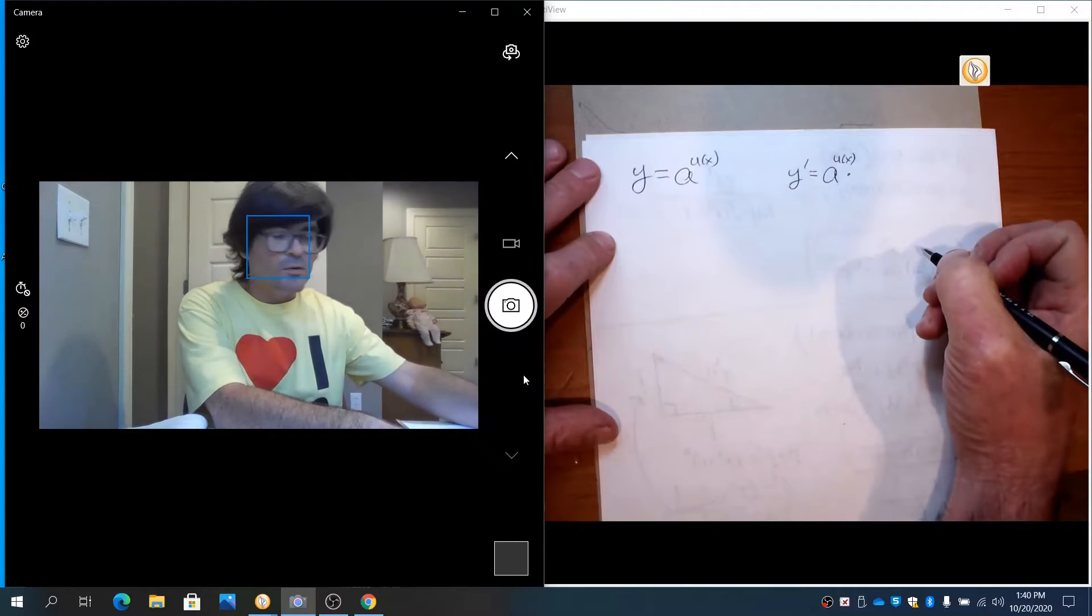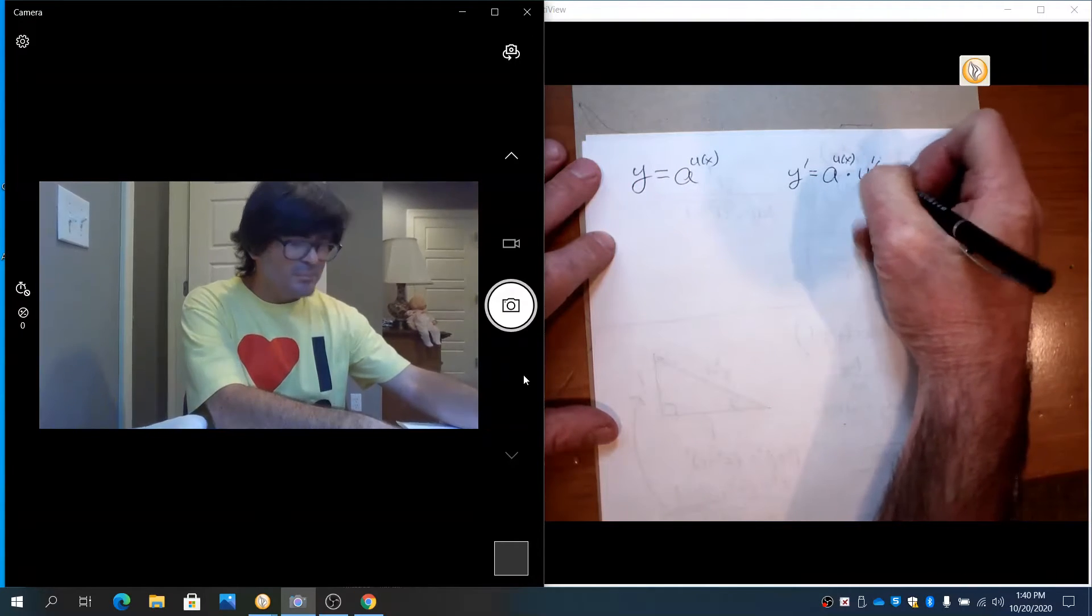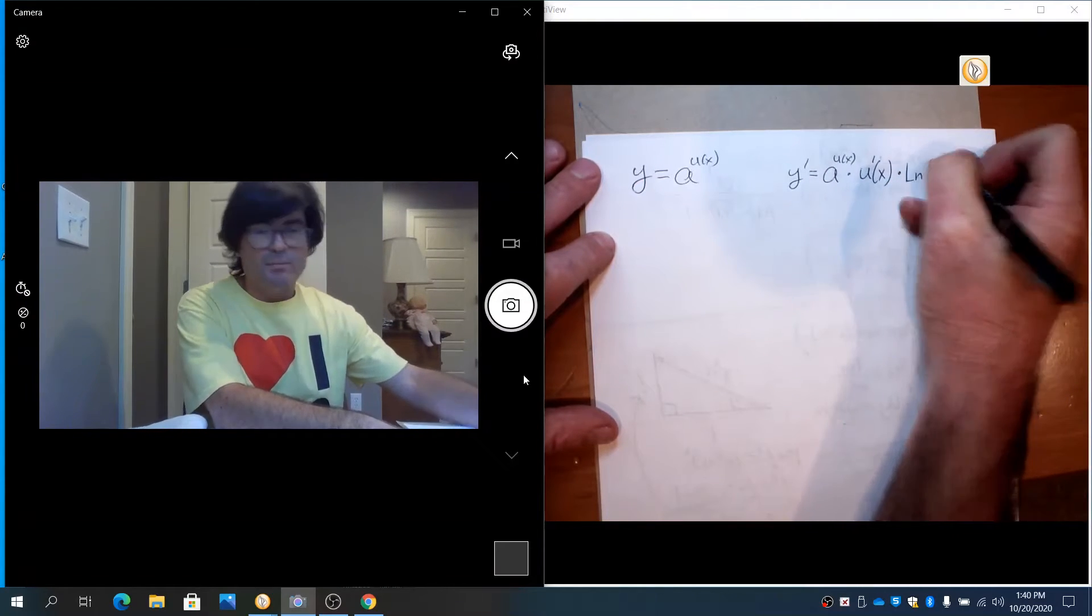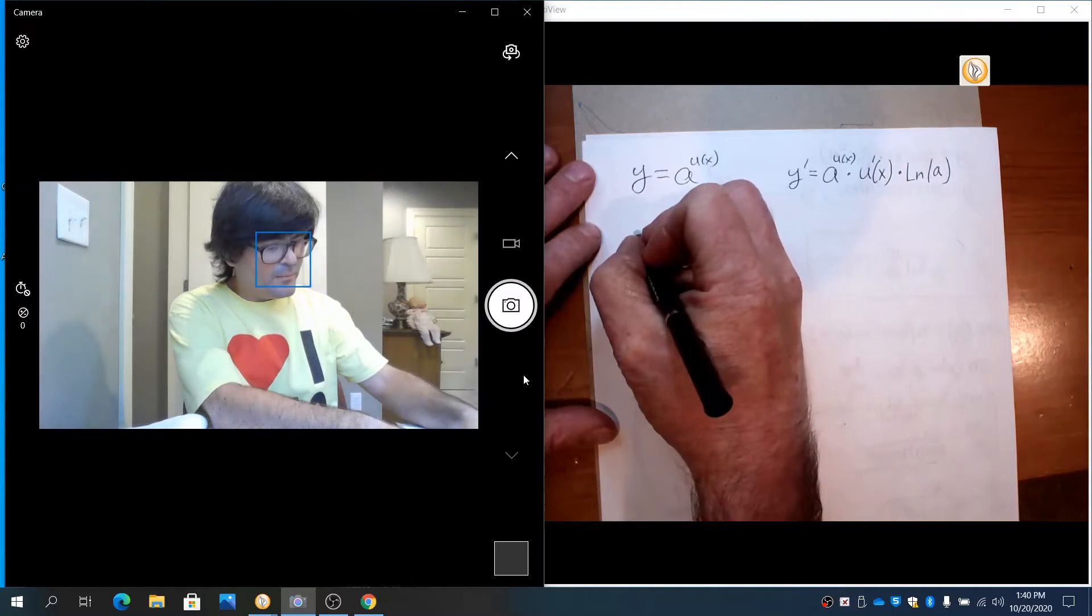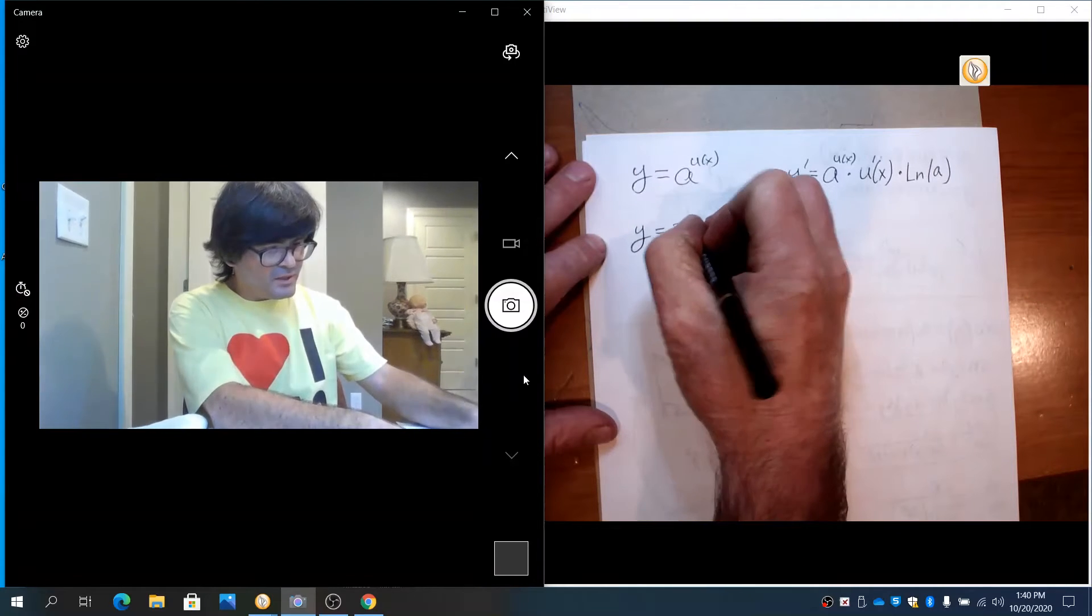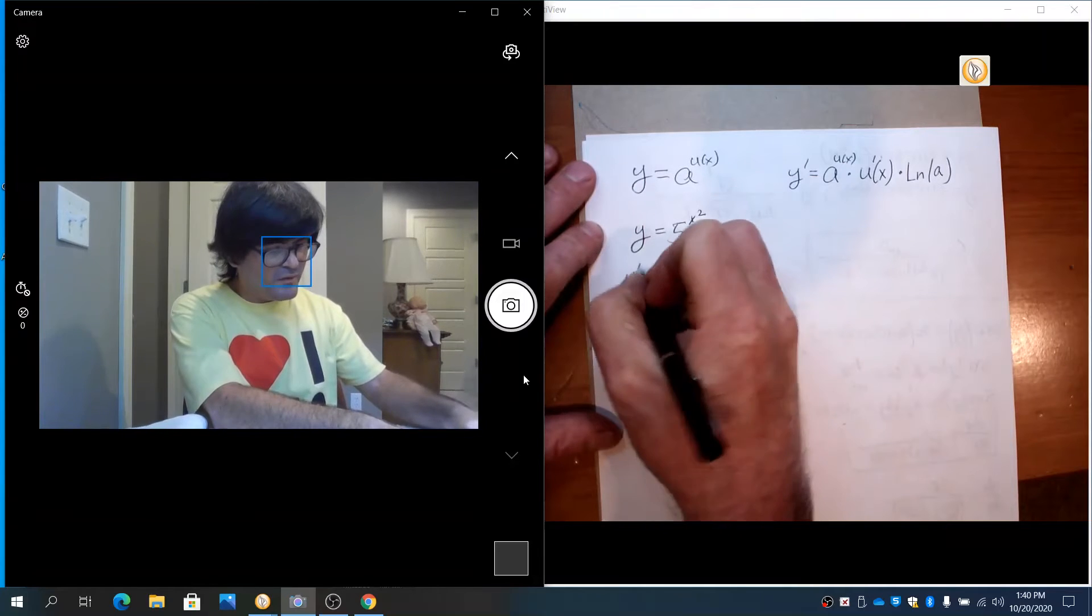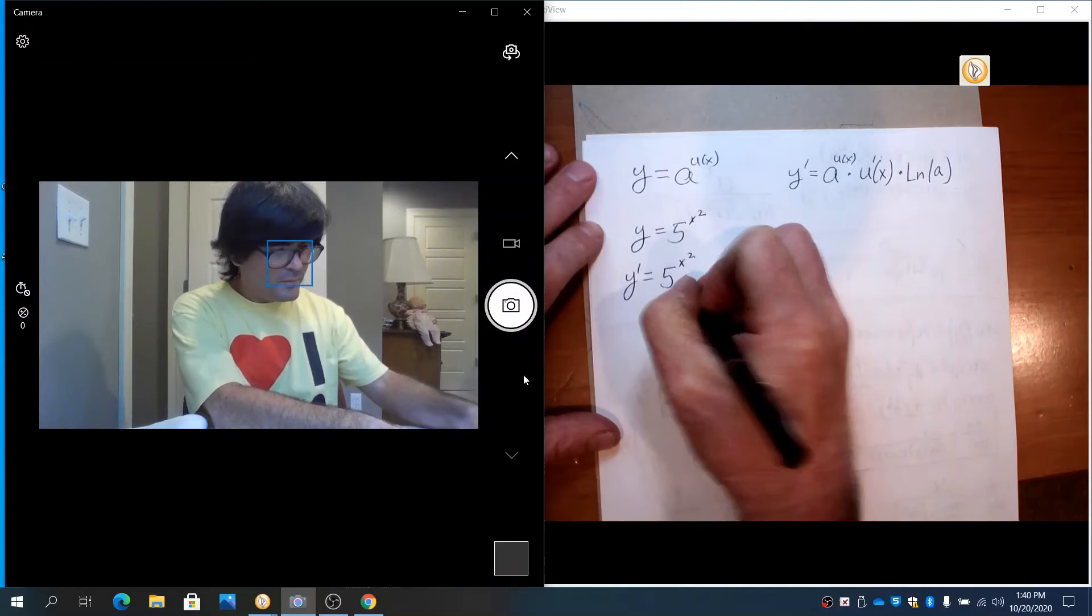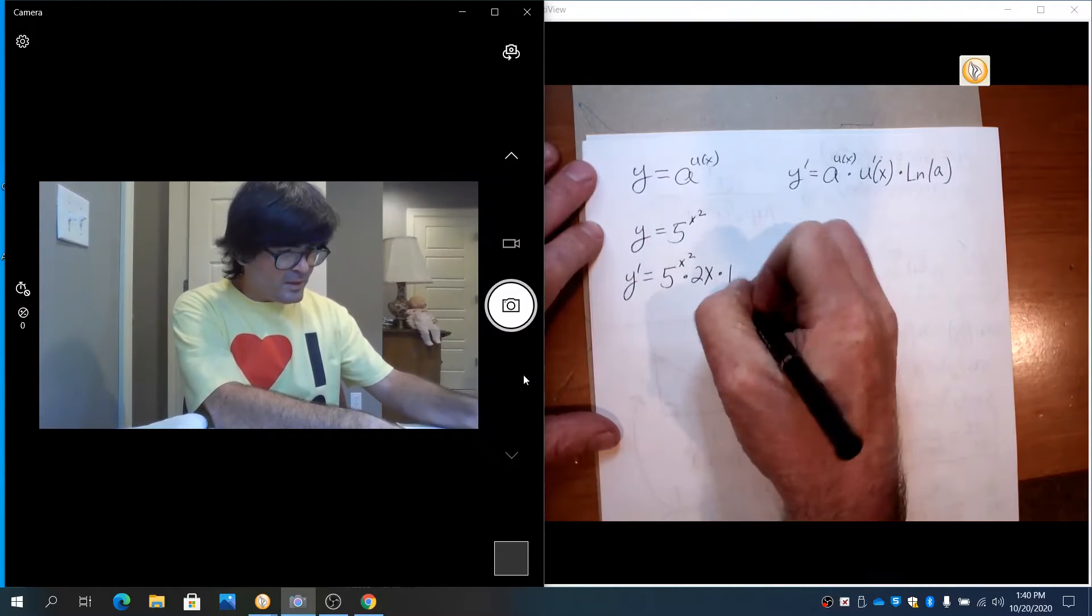The second part is you multiply by the derivative of the exponent, which is u prime. And then the third part is you multiply by the natural log of the base. So if you have 5 to the x squared power, that's an exponential function, you will have the derivative of 5 to the x squared power times 2x times natural log of 5.